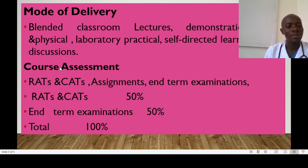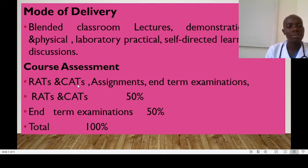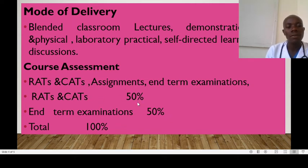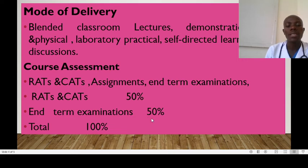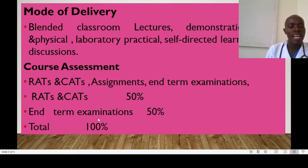What about the course assessment? We're going to have random assessment tests, continuous assessment tests, assignments, and end-term examinations. The random assessment test and the continuous assessment test are going to give you 50% of your final score. We'll also be having an end-term examination which will be out of 100 but converted to 50, so that we get the 50 plus the 50 course assessment test, giving you a cumulative score of 100% at the end of the trimester.